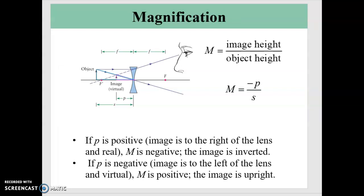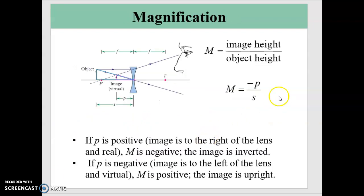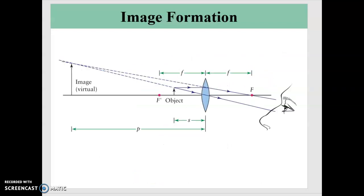If P is negative — meaning P is on the same side of the lens as S — then when I plug in minus times the quantity negative P, those minus signs cancel out, and my magnification is positive, meaning the image is upright. That is how to interpret the magnification.